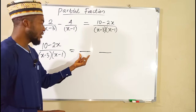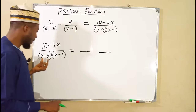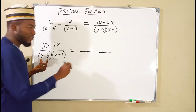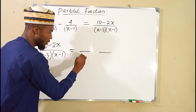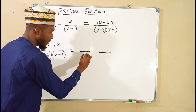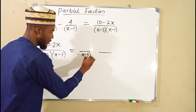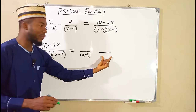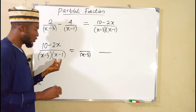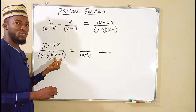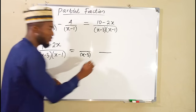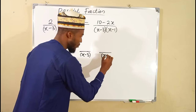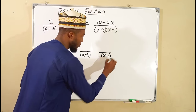The first fraction is going to contain x minus 3 as its denominator, while the second fraction is going to have x minus 1 as its denominator.